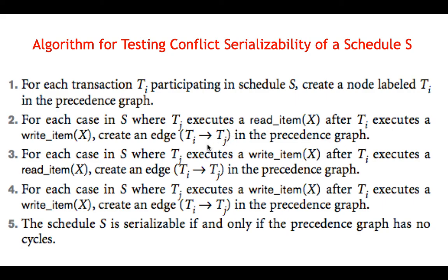An edge is created in three cases: if TJ has read X and TI had write X before it, draw edge TI to TJ. If TJ has write X and TI had read X before it, draw edge TI to TJ. If TJ has write X and TI had write X before it, draw edge TI to TJ. After drawing all edges, if there is a cycle the schedule is non-serializable; if no cycle, it is serializable.